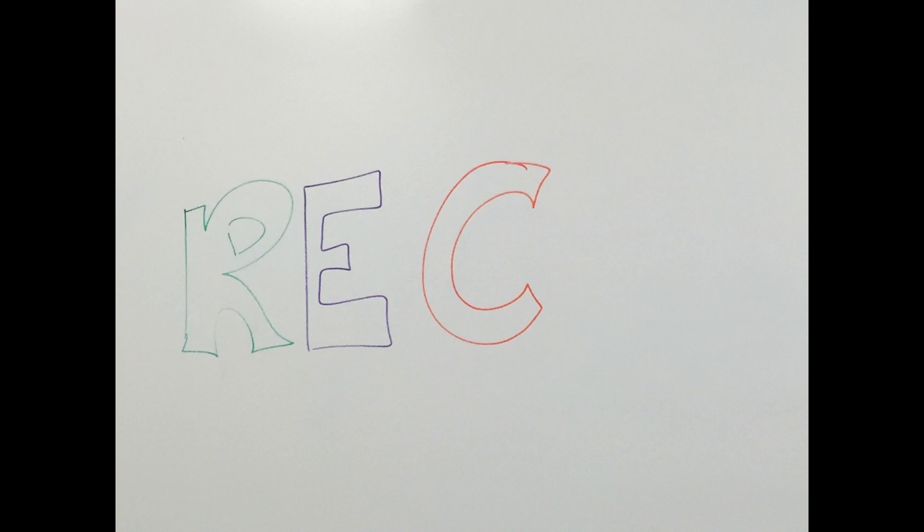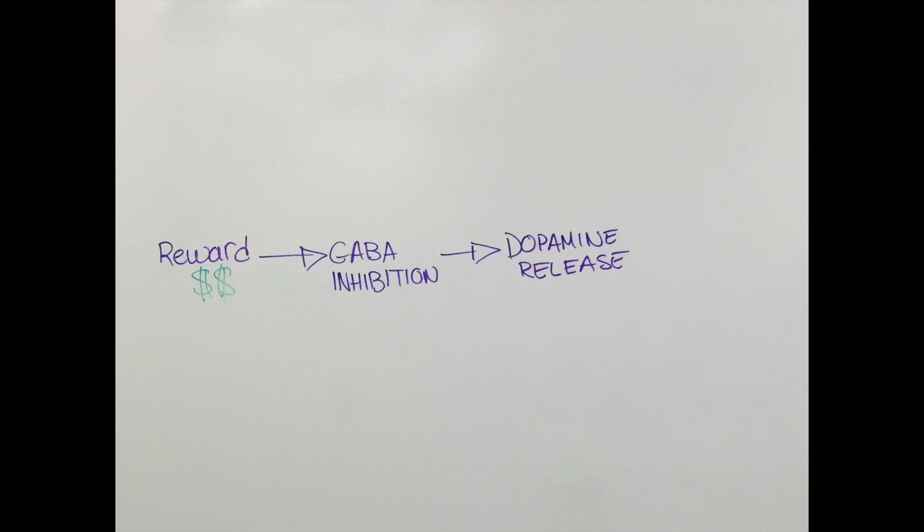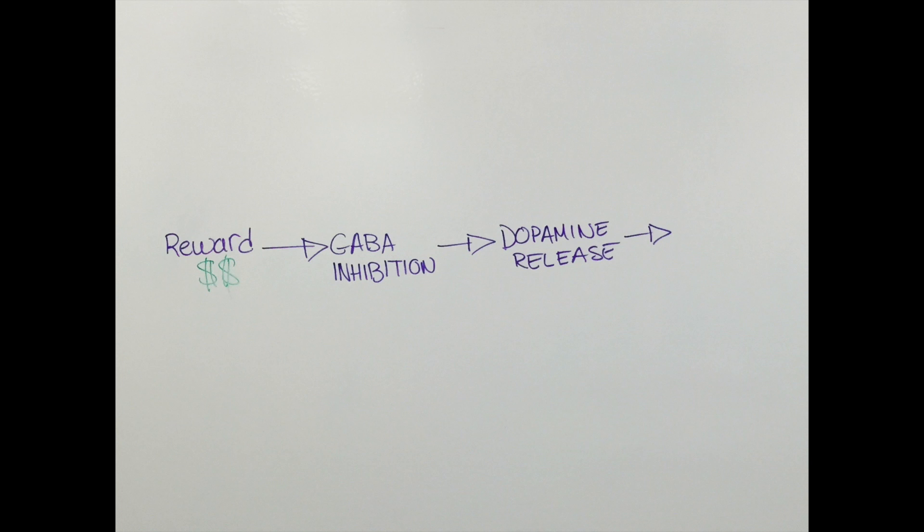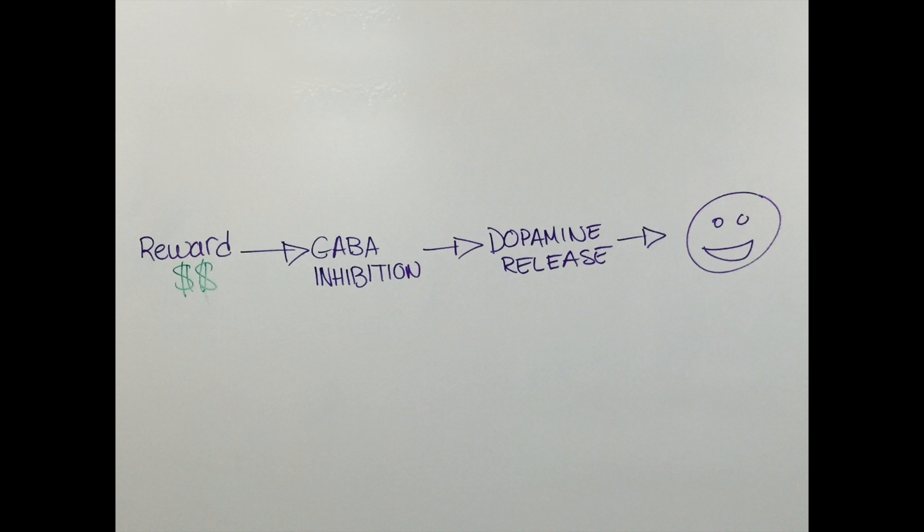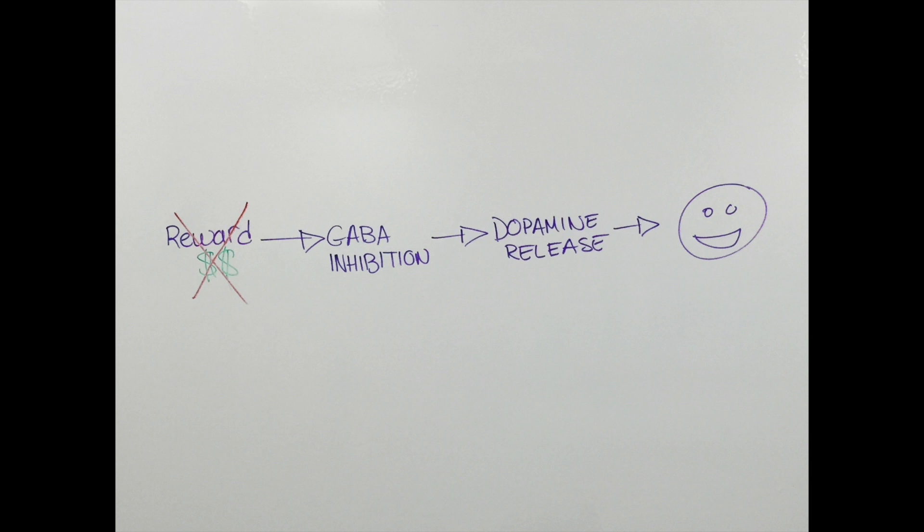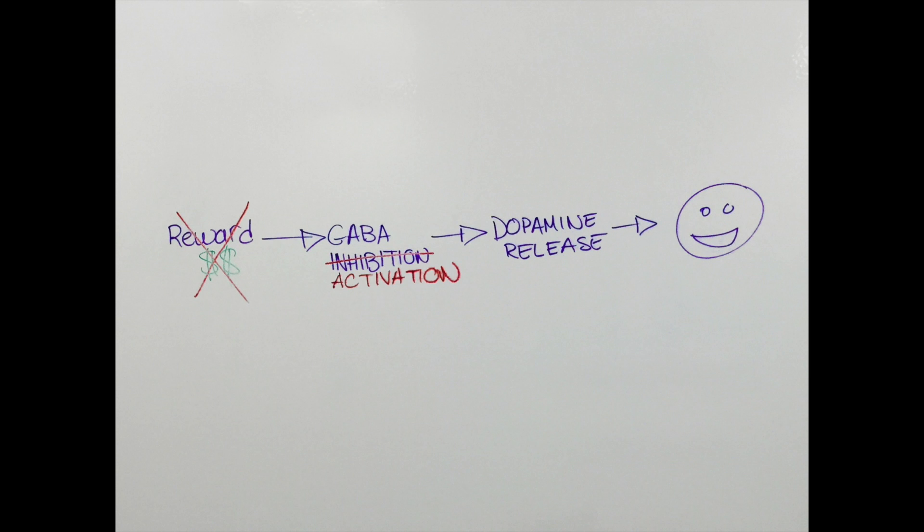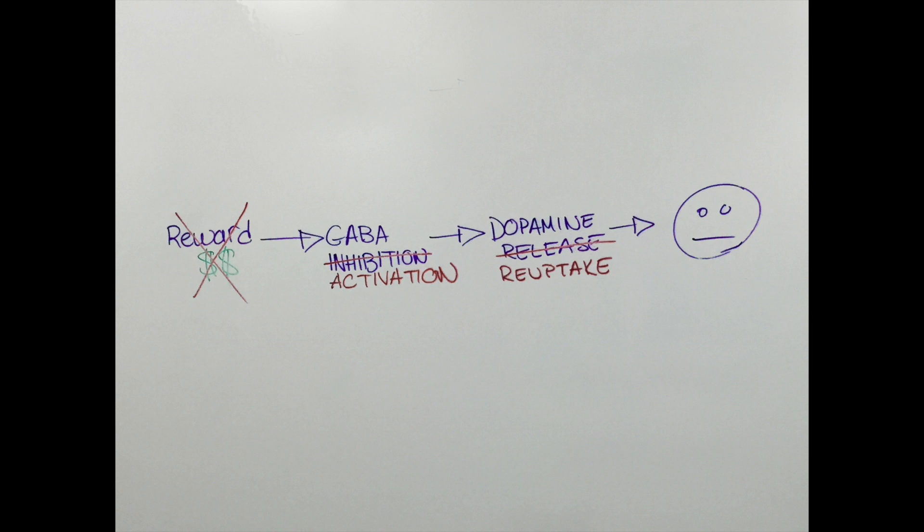Let's recap. Reward like food is present, which causes GABA inhibition. Dopamine is now released. A signal occurs that results in you feeling a positive emotion. When the reward is terminated, GABA is activated again. Dopamine will get reuptaken in two different ways.